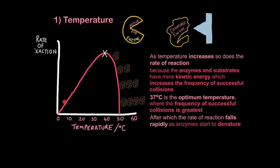So, just to review. As temperature increases, so does the rate of reaction, because enzymes and substrates have more kinetic energy, which increases the frequency of successful collisions. At 37 degrees Celsius, we have reached optimum temperature. This is where the rate of reaction is at its fastest. Beyond optimum temperature, the enzymes start to denature, and the rate of reaction falls rapidly.